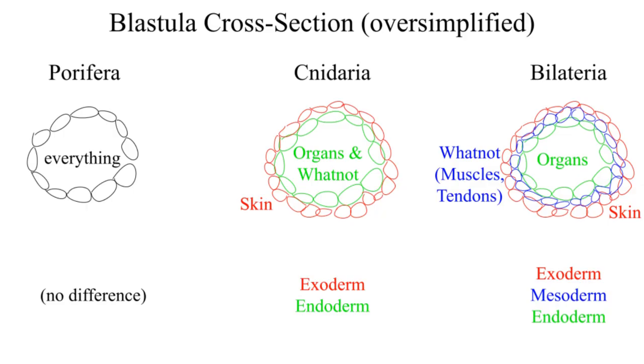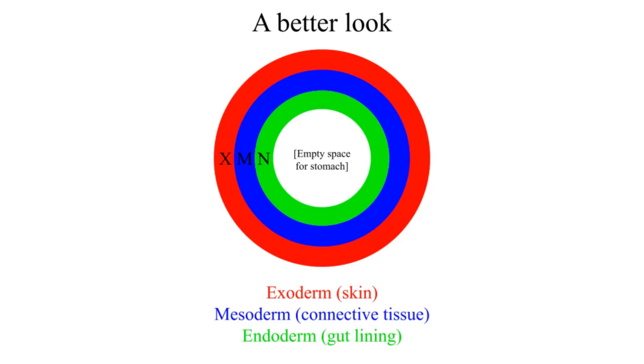Another important deal with bilaterians is that they now have three germ layers, the ectoderm, endoderm, and mesoderm. But what if there was a hole in the middle?